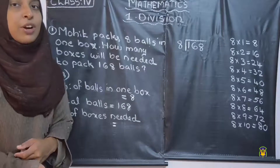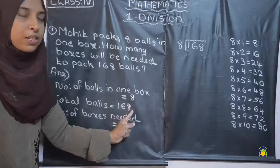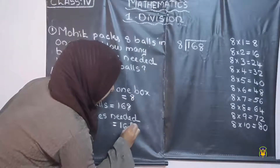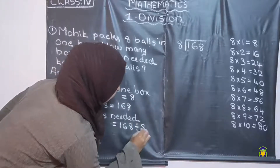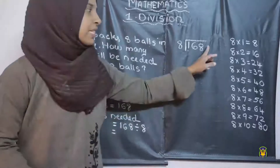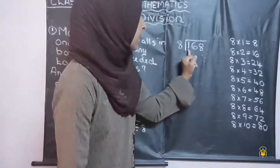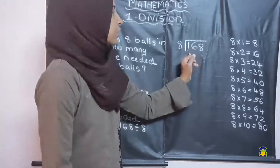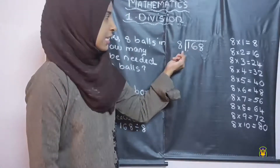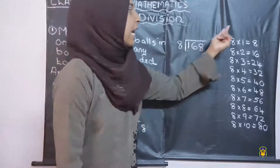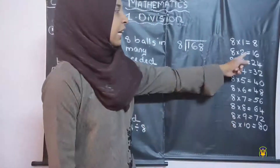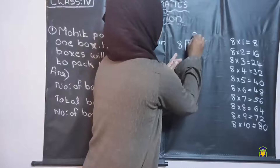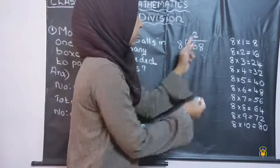How are we finding this? We want to divide the total balls by the number of balls in one box — that is 168 divided by 8. The first digit is 1, but 1 is less than the divisor 8, so we want to take 2 digits — that is 16. 16 is greater than 8. Check in the multiplication table of 8 whether we are getting 16 as the product — yes, 8 into 2 is 16. We write 2 above 6, and 8 into 2 is 16.